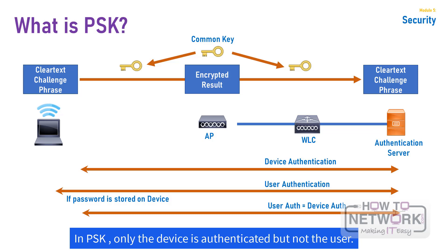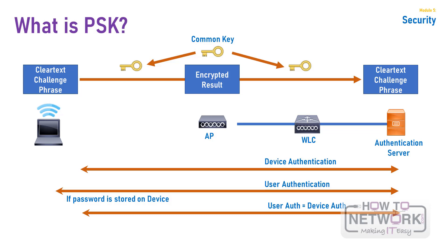The same authentication process occurs whether the device is being used by a valid user or by an attacker. For this reason, storing personal passwords on laptop or desktop computers is considered dangerous. Unless authentication requires the user to enter credentials, then the device, not the user, is being authenticated. Whether the infrastructure authenticates a device or its user, the process occurs when a connection to the network is made. The authentication process begins at either an AP or wireless controller at layer 2, or authentication can also occur deeper in the network, in which case layer 3 is used to communicate between the end device and the authentication server.